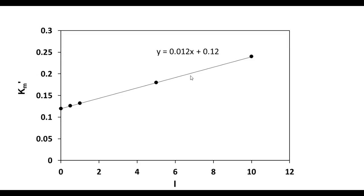In this graph, the same graph copy pasted, Km dash versus I. So the slope Km by Ki is 0.012, and therefore Ki is nothing but Km by 0.012 from here. We also know, and that is Km we know from the intercept to be 0.12. So 0.12 by 0.012 is 10. So the inhibitor constant happens to be 10 millimolar.